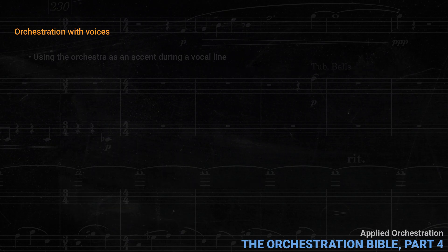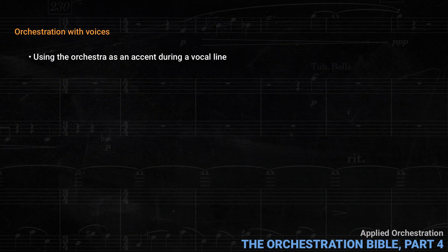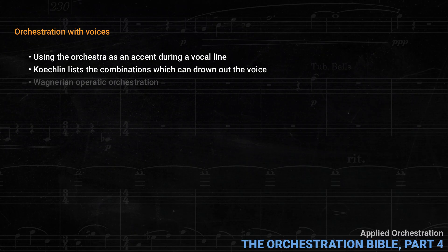Then Koechlin goes on to discuss ways of using the orchestra as an accent during a vocal line. This is important because sometimes the best thing to do is to leave the vocal line unaccompanied, with very minimal accompaniment. Then the orchestra can simply underline an important moment, or even dramatically interrupt the voice. Koechlin also lists the combinations which can drown out the voice. He then goes into some detail about Wagnerian operatic orchestration, since Wagner tends to use massive instrumental groups, where singing in a Wagner opera requires a particularly powerful voice and lots of endurance.